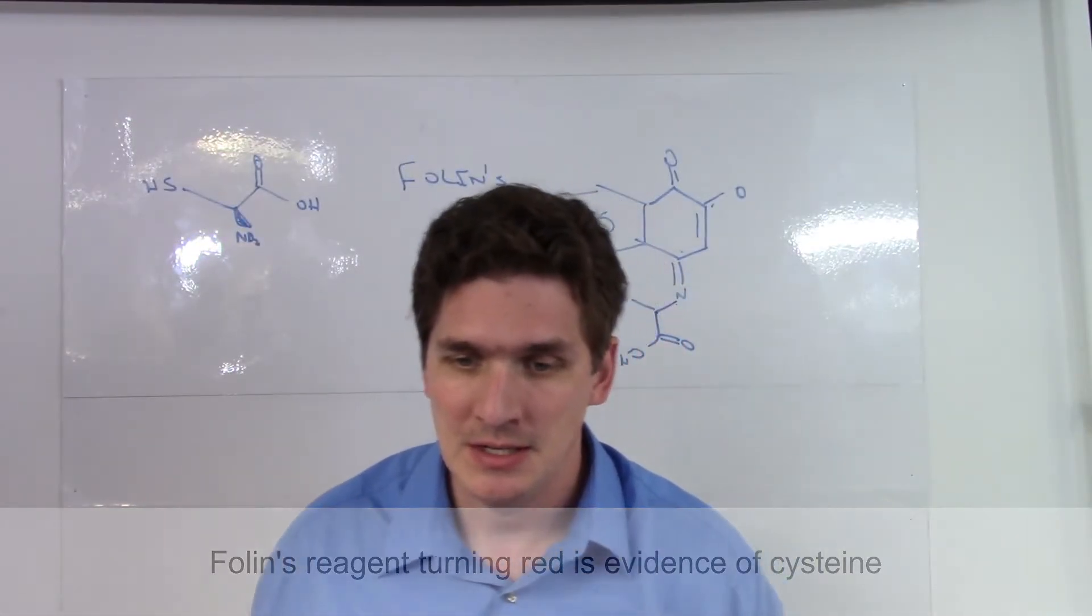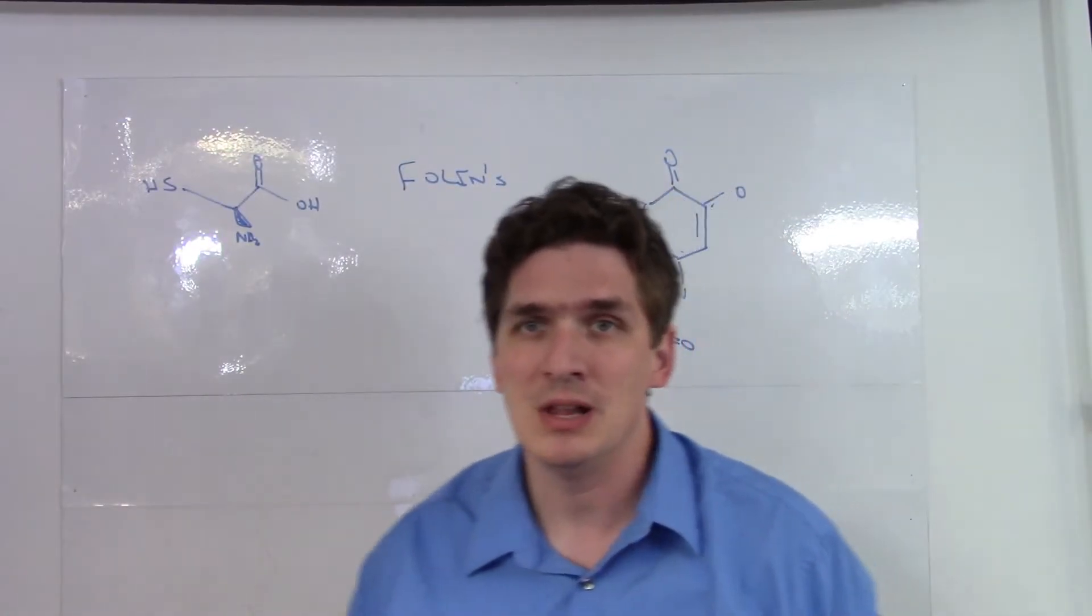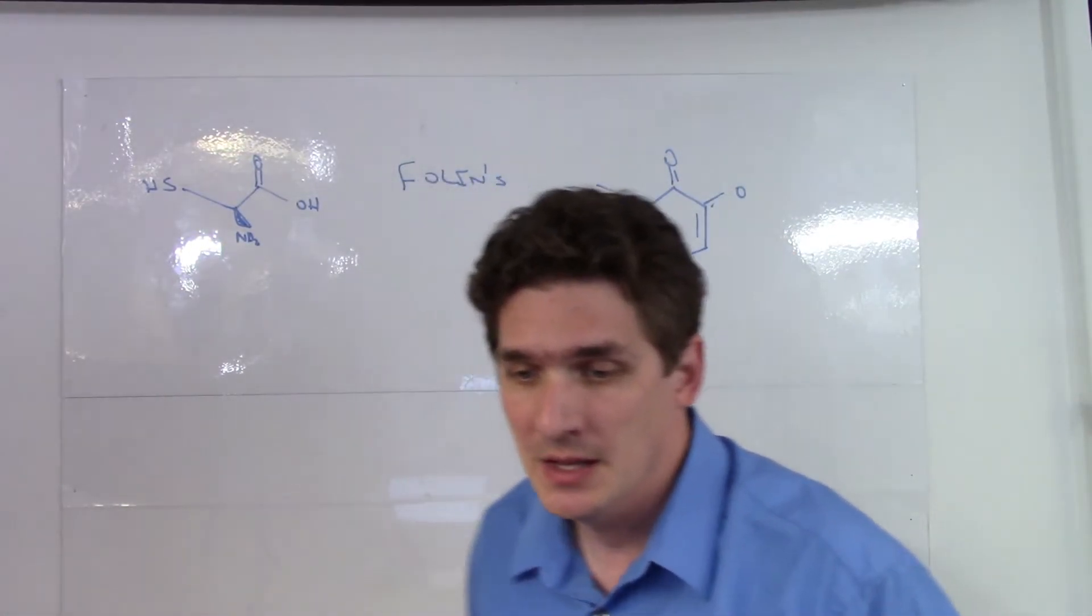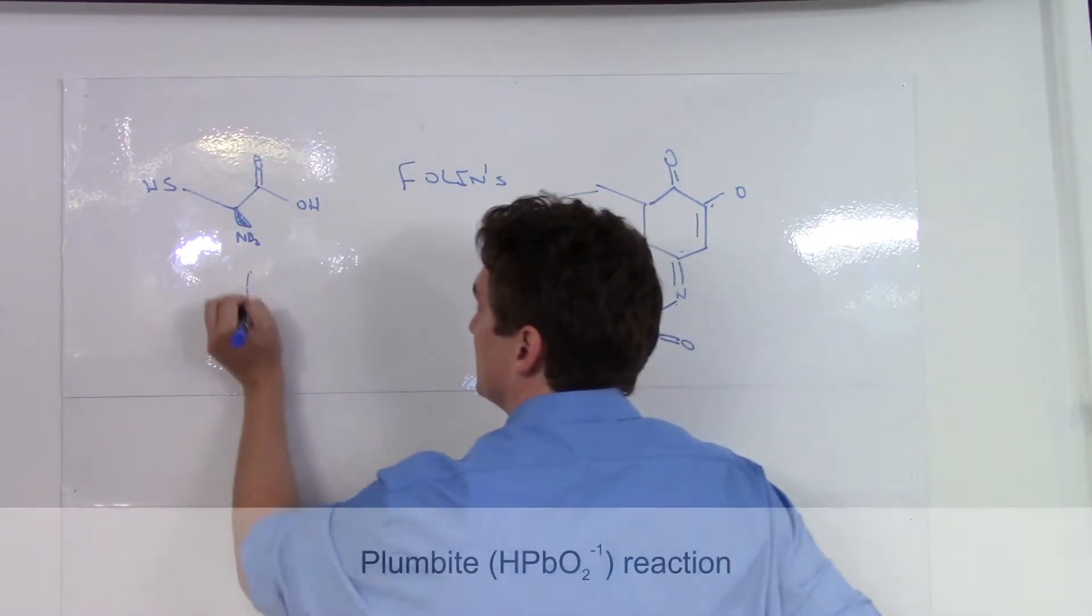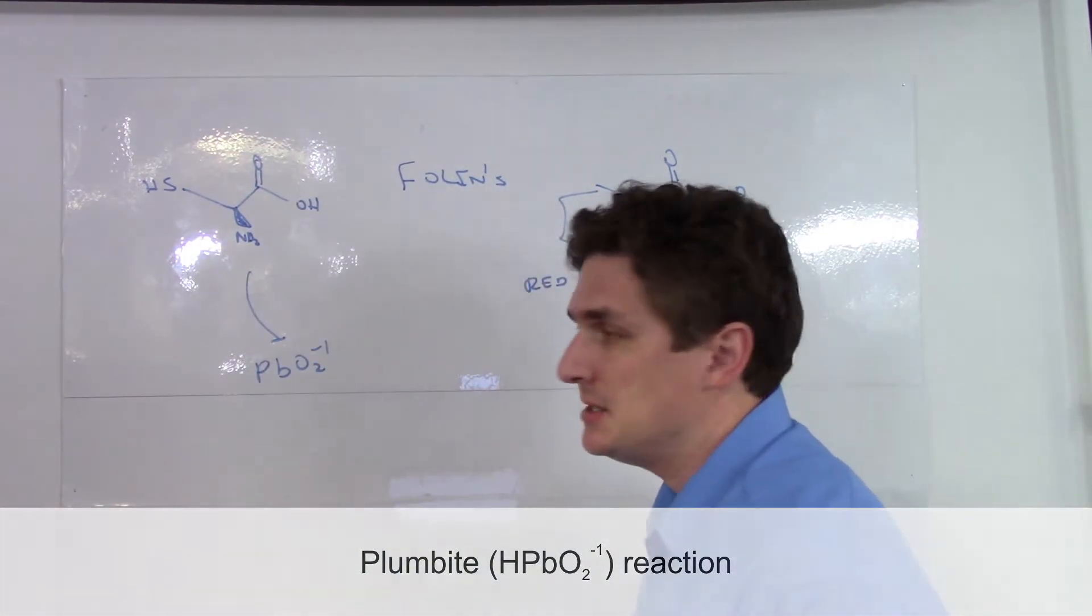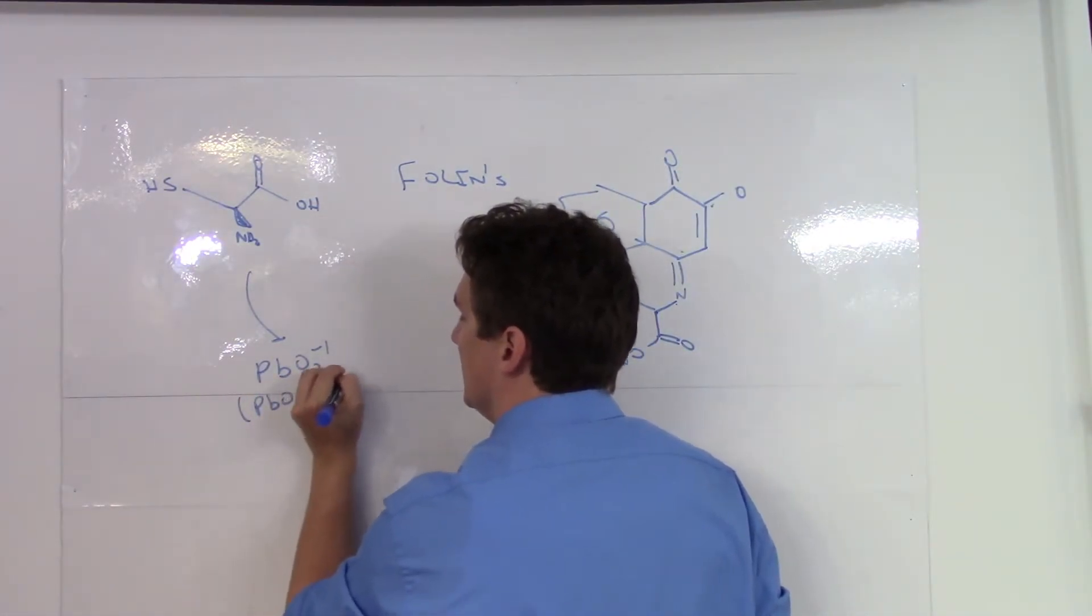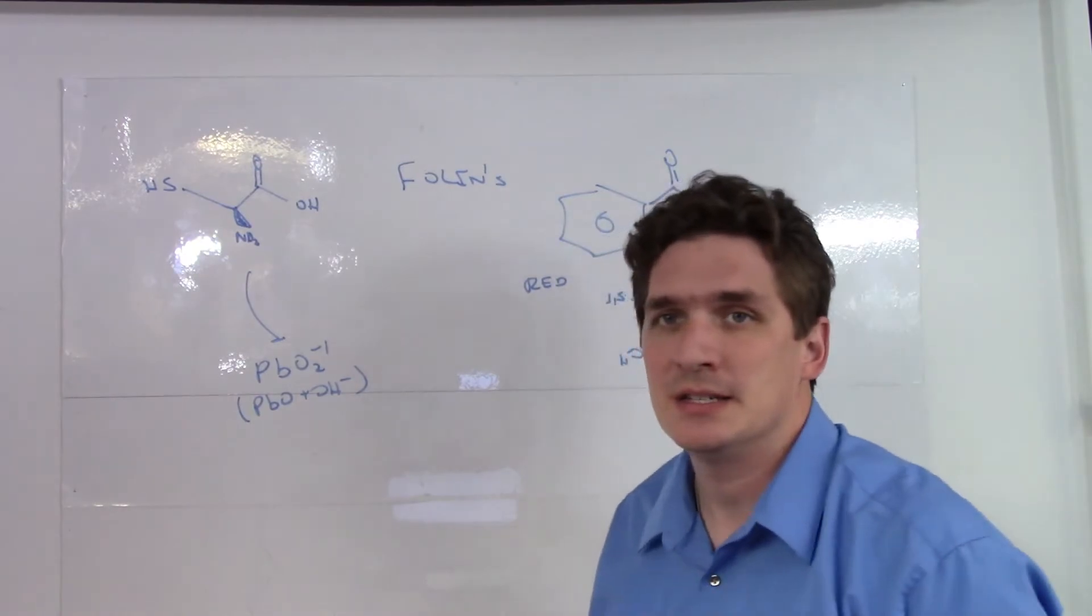Another test for free sulfur is done using what's called plumbite, or PbO2 minus 1, the plumbite ion. This plumbite ion is formed by mixing lead(II) oxide under highly alkaline or basic conditions.